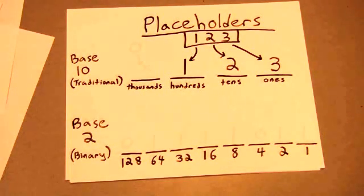In base 2, we have our placeholders incrementing by multiples of two. 1 times 2 is 2, 2 times 2 is 4, 4 times 2 is 8, 8 times 2 is 16, and so on, until we hit 128. And we stop at 128 because when we're talking about computers, the system is an 8-bit system, and each placeholder is a bit, so the total number of placeholders is equal to 8.